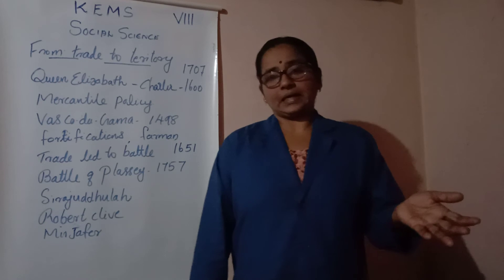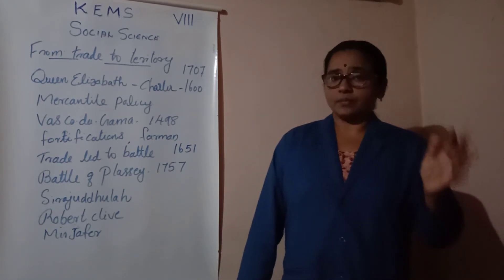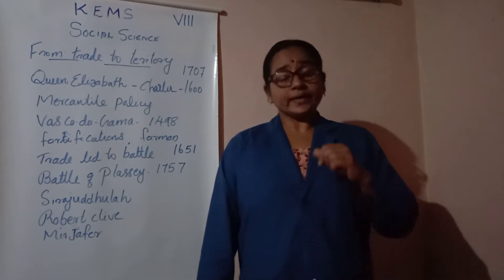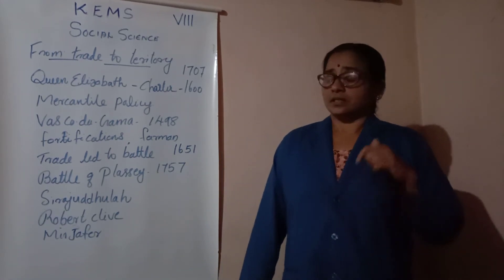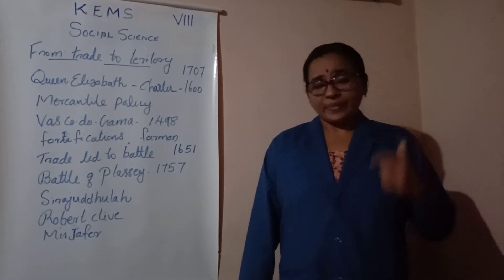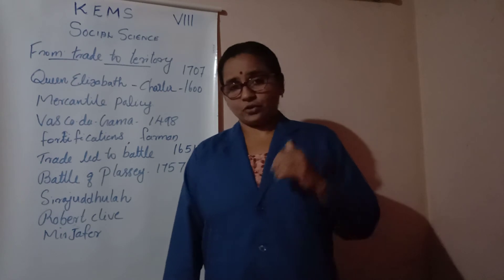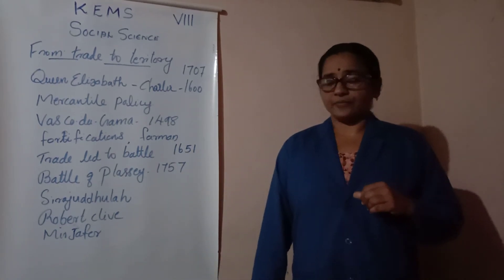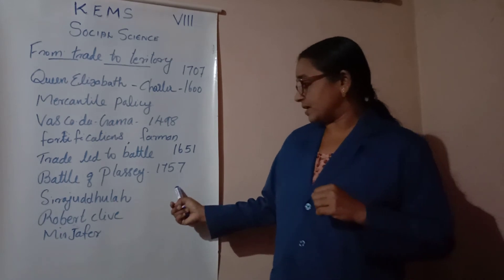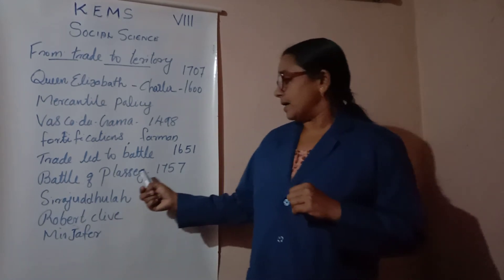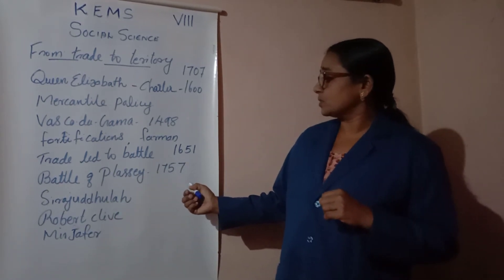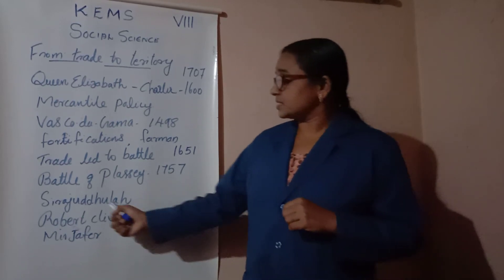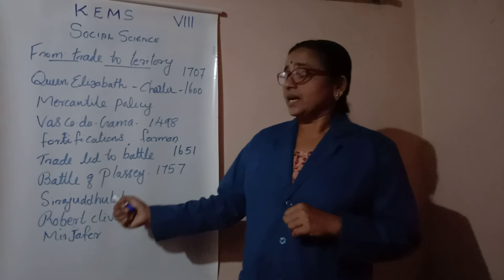Siraj ud-Daulah marched with 30,000 soldiers and captured the English factory at Kasim Bazar. On hearing this news, the company officials sent a force under the leadership of Robert Clive.